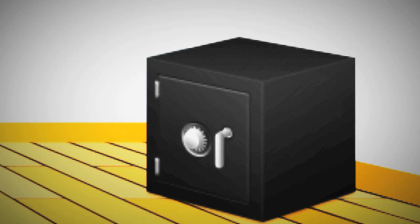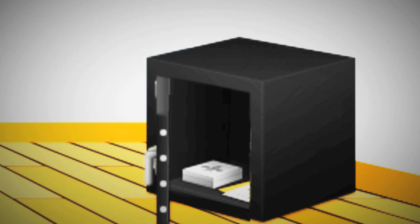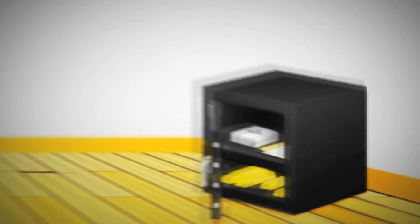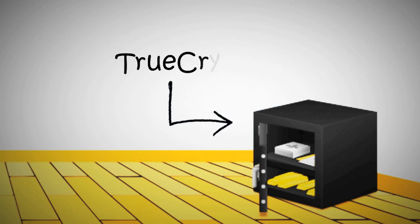But what if someone found a way to break into that? Then they'd have access to all your valuables — unless, of course, that safe had a hidden compartment that not even the thieves could guess was there. Replicating this scenario on a computer is where TrueCrypt comes into play. You can use TrueCrypt to make a strong encrypted password-protected folder, but you can also use it to make a hidden volume inside that folder so that only those that know it exists will know that it's there.